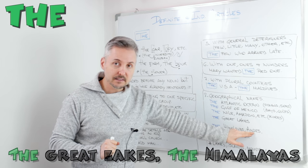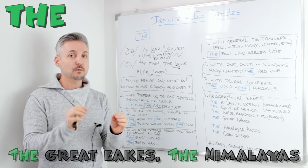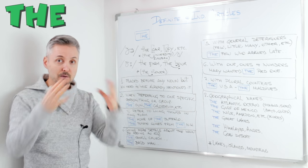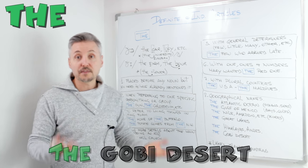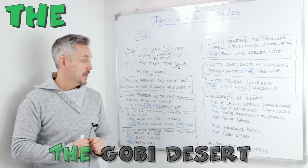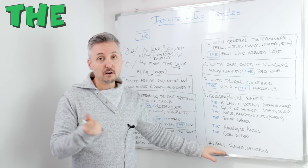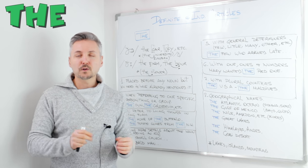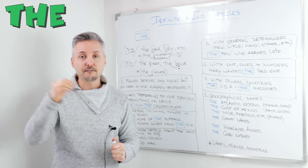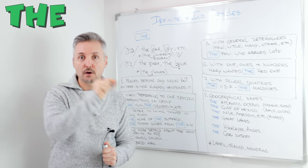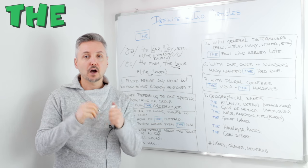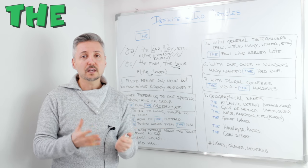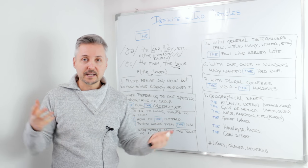'The Himalayas', 'the Andes' — it's a group of mountains. If you want to talk about Everest, you don't say 'the Everest' — you say 'Everest', just the name of the mountain. 'The Gobi Desert' — with deserts, we need 'the'. With single lakes, islands, or mountains, we don't use 'the'. But if you want to be specific, for example 'the Isle of Man', you can say 'the'. Australia — a continent and an island — we don't use 'the'. Same with Greenland.